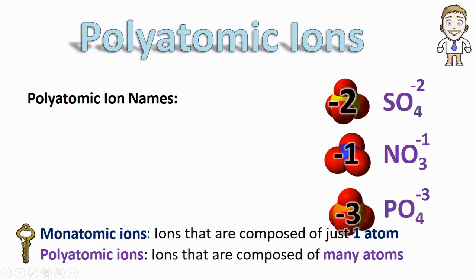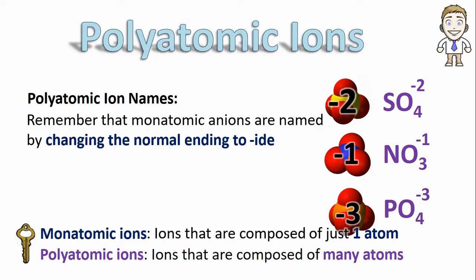Now let's talk about what to call these big giant polyatomic ions, starting by remembering how monatomic ions are named by changing the normal ending to -ide. For example, if you had a sulfur with a minus two, you wouldn't call it sulfur. You drop the ending and change it to -ide, making this a sulfide ion.